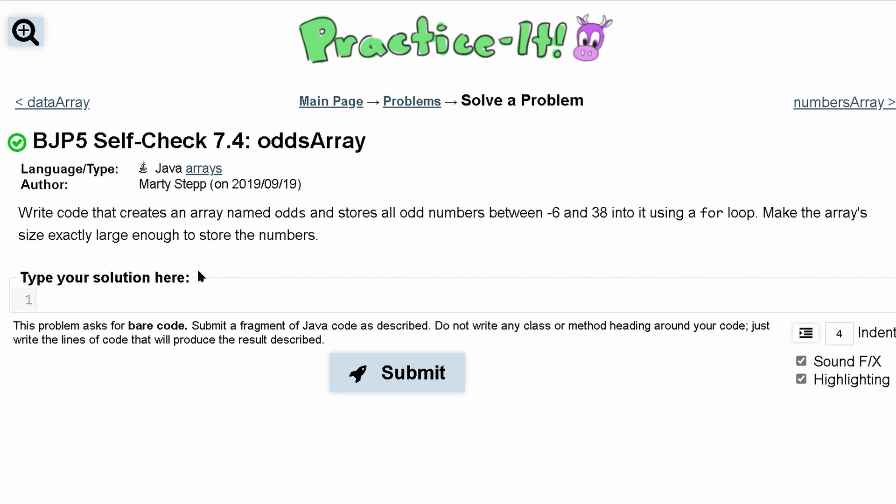We have odds array. We want to write code that creates an array named odds. So we'll do int. It's an array, so we're going to have our brackets. It's called odds, and it's equal to a new type of array.